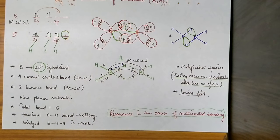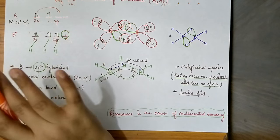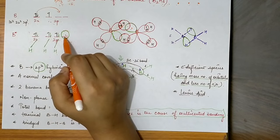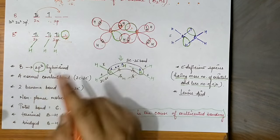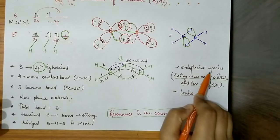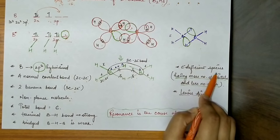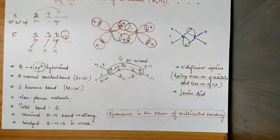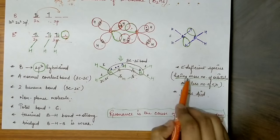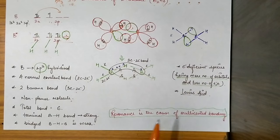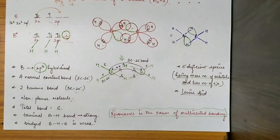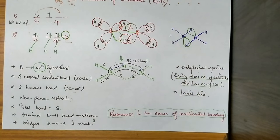Since electrons are not completely donated but only delocalizing, this molecule is still an electron deficient species. Another way to understand this: when you have more orbitals and fewer electrons, the molecule is always electron deficient. Always remember that when orbitals outnumber electrons, the molecule is an electron deficient species — and if it is electron deficient, it is a Lewis acid.